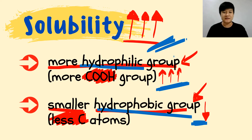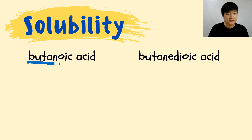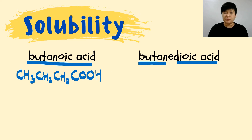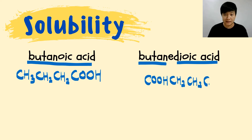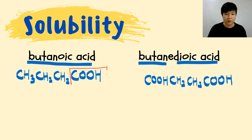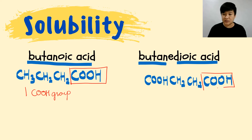Let's look at the first example: butanoic acid versus butanedioic acid. Butanoic acid is a four-carbon carboxylic acid with a three-carbon alkyl group and one COOH. Butanedioic acid has a total of four carbons (butane) with two COOH groups. The main difference here is that butanoic acid has one COOH group while butanedioic acid has two COOH groups.